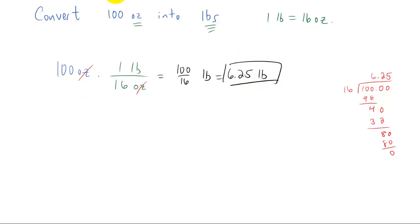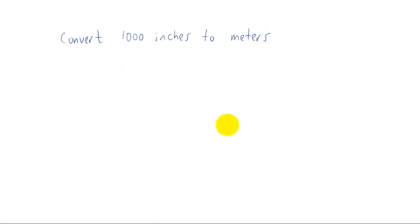Alright, these conversions can get complicated in a couple of different ways. Let me show you one way it can become a little bit more complicated. What if we wanted to convert 1,000 inches into meters? Well I'm looking at my list of conversions here and I don't see any relationship directly between inches and meters. So what we need to do is we need to come up with a plan.